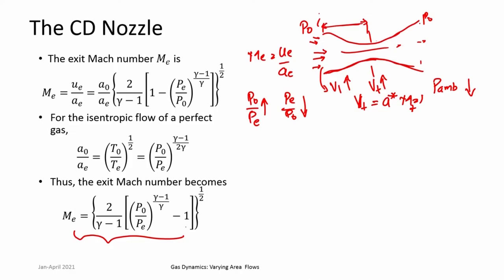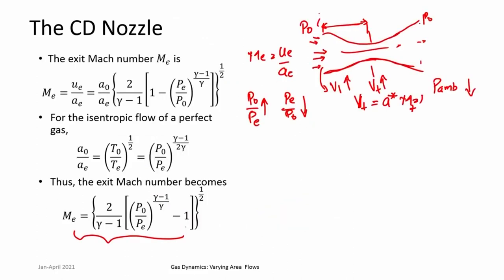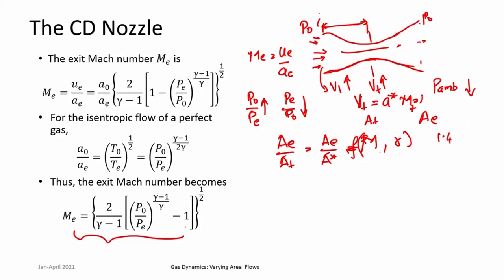What is known as the perfect operation of the nozzle is when you keep the correct pressure ratio. This nozzle has a given area ratio A_e/A_t. When properly choked, it becomes A_e/A*. This corresponds to a specific Mach number — it is a function of Mach number and gamma. For gamma = 1.4, for example a Mach 2 nozzle, A_e/A* = 1.6875. So if you have a nozzle with a given area ratio, it should produce Mach 2.